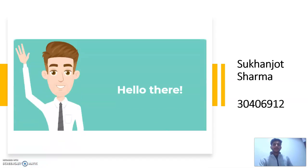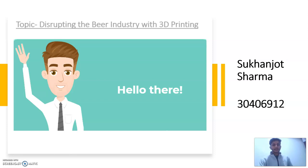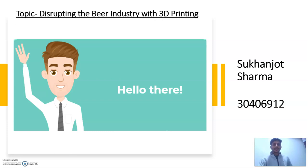Hello everyone, my name is Sukhumjo Sharma and my student ID is 30406912. My topic is Disrupting the Beer Industry with 3D Printing.